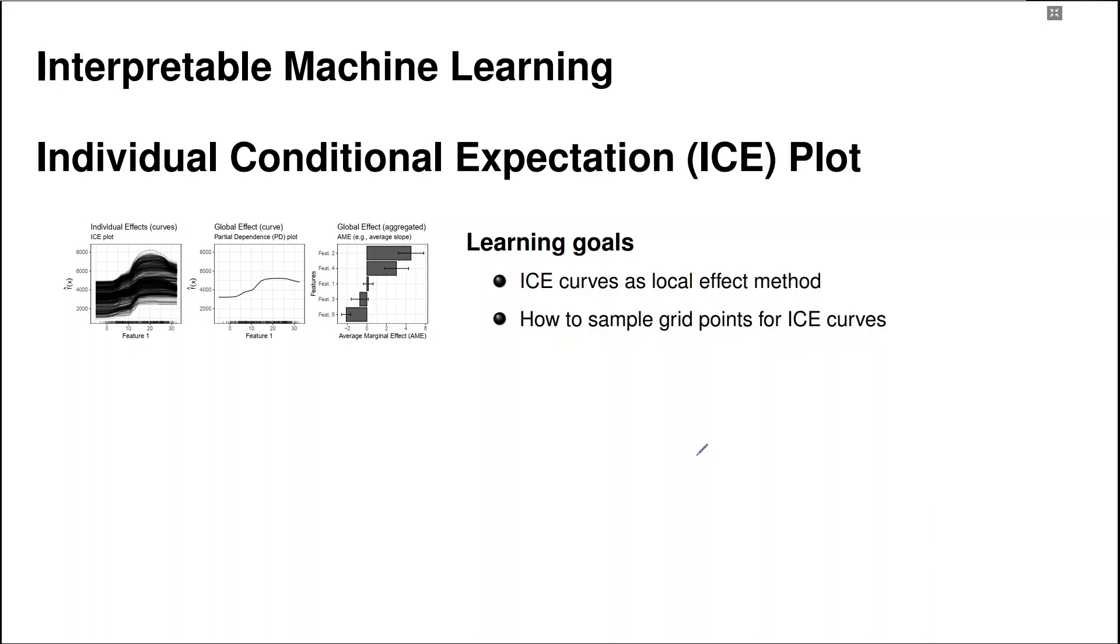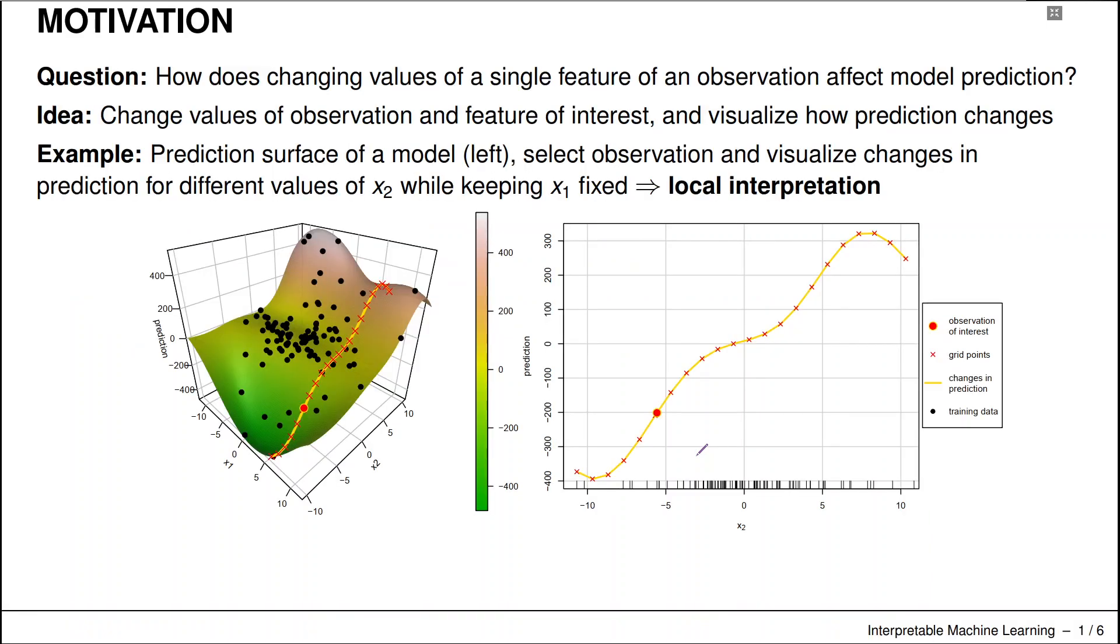So let's start. Our motivation is a very basic question: how does changing the value of a single feature of a given observation affect our model prediction?